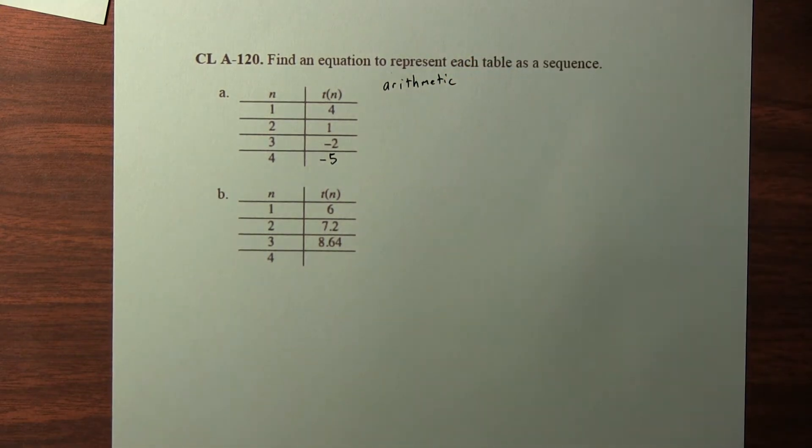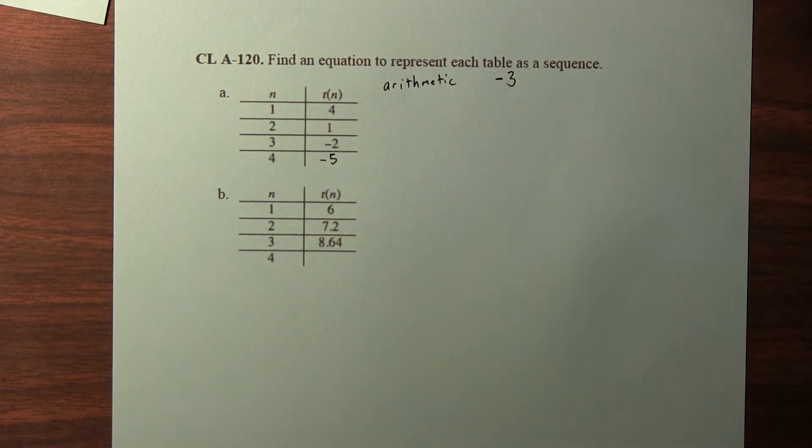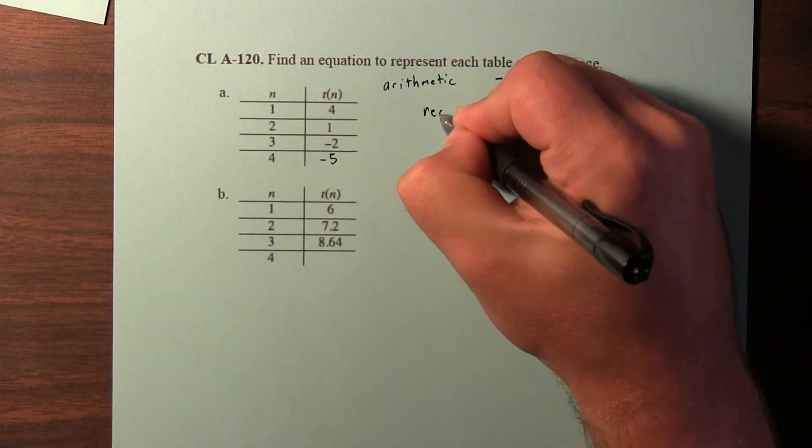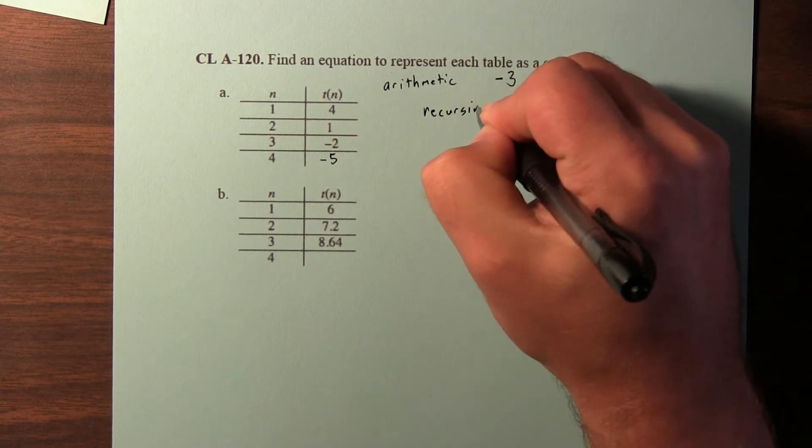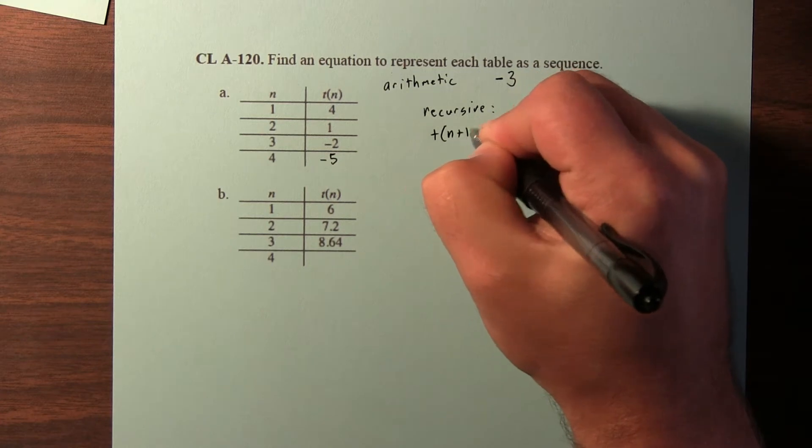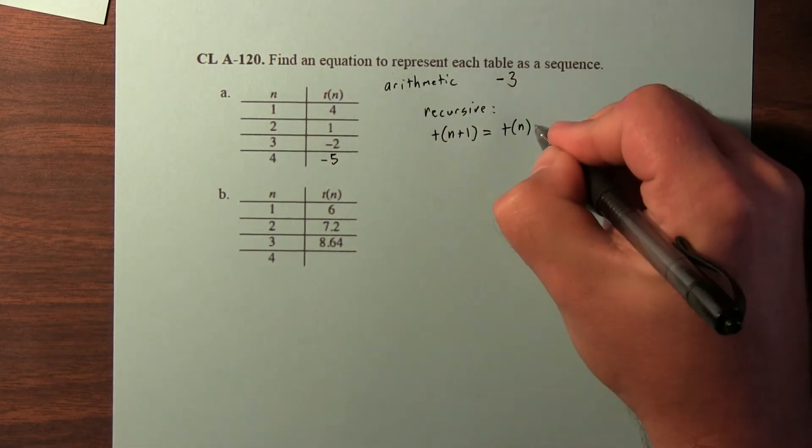Once you know the pattern, like this pattern for example is subtract 3 to get the next term, it's easy to write the recursive equation. So the recursive equation here, to get the next term, just take your current term and subtract 3.